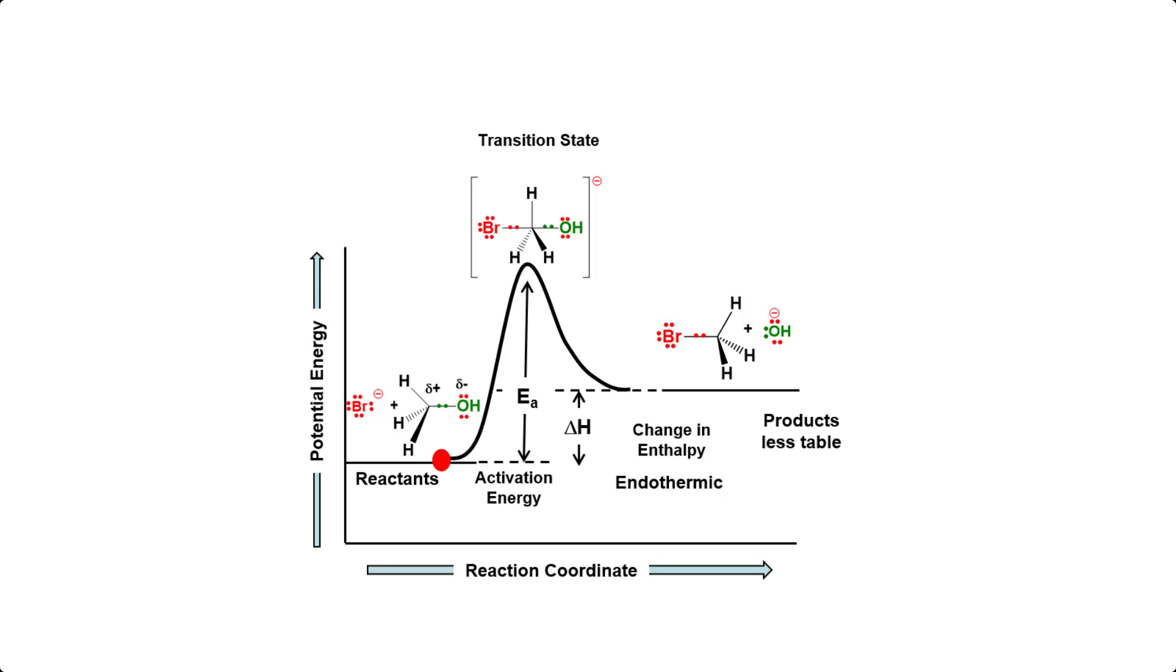The bromide ion may collide with the electrophile with the correct orientation, but in the transition state, the oxygen starts to gain a negative charge. The oxygen is less able to stabilize the negative charge than the bromide ion. So the reaction would go backwards to produce the less basic, more stable bromide ion.